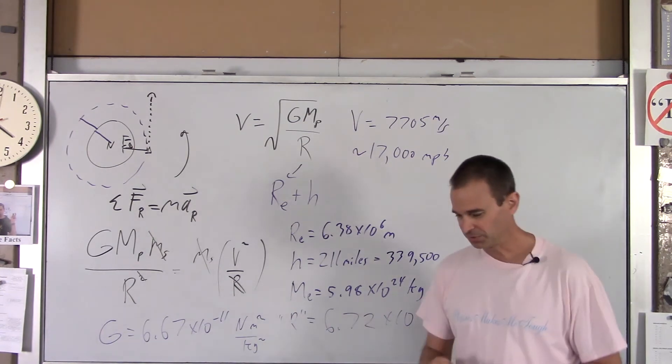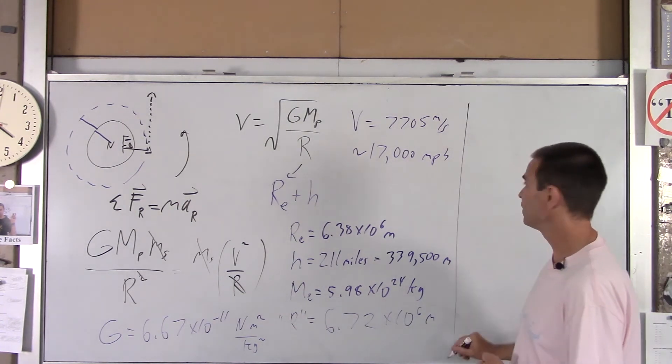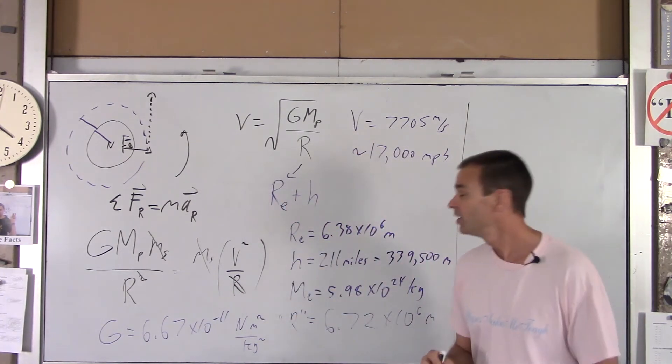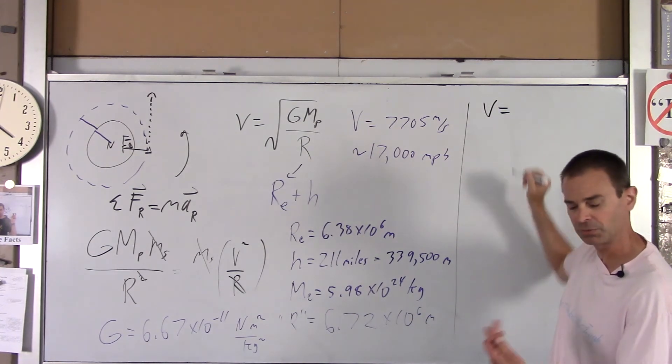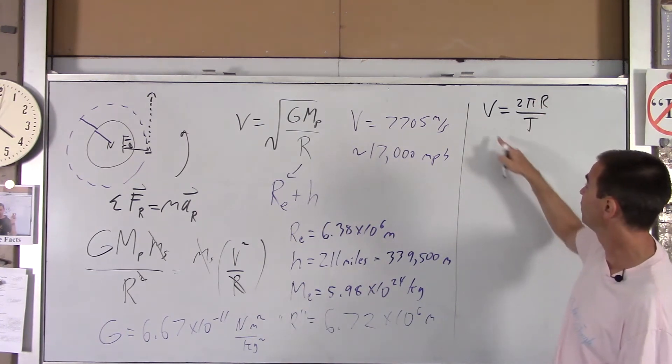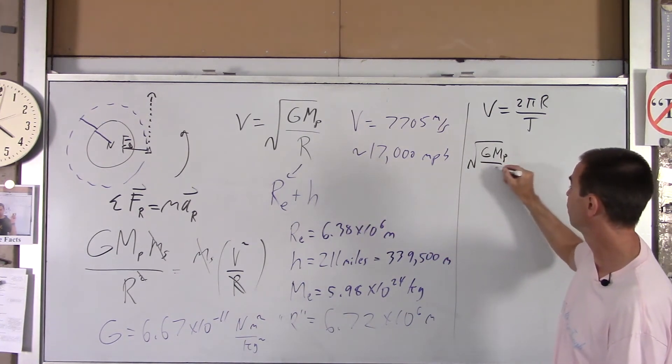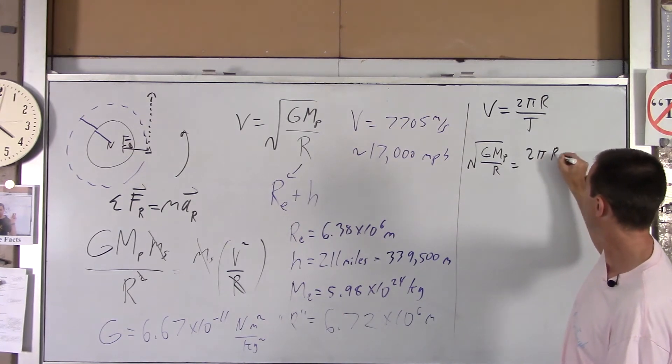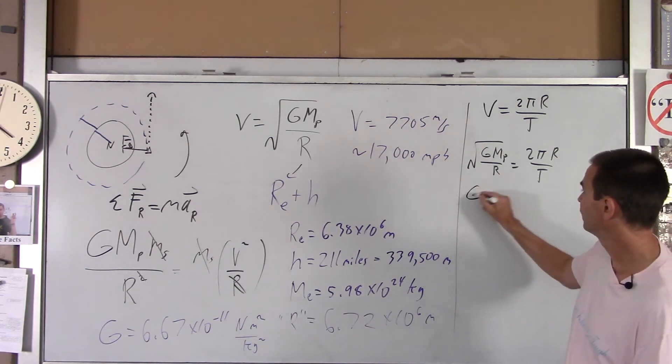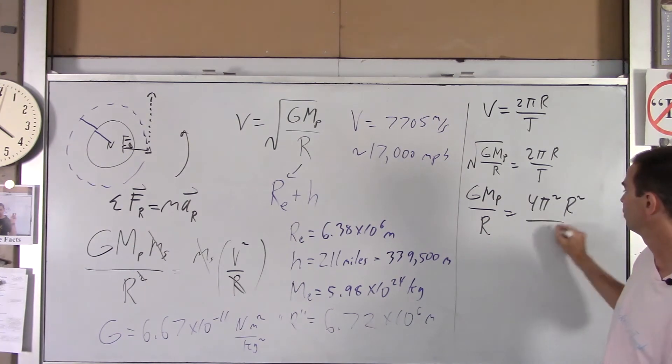Now, the other question we asked was, how long does it take those astronauts to make one complete circle, one complete orbit? So, we're going to use this equation. We're going to find period in terms of the stuff that we're given, mass and radius and such. So, we know that velocity of anything going in a circle, and we're going to assume a circular orbit here, is 2 pi r over period. And velocity is this. So, if I put that in there, square root of g mass of the planet over r equals 2 pi r over t, and I want to solve for t.